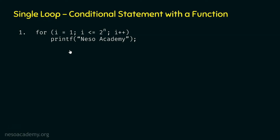In iteration number 1, the value of i is 1. Since 1 is less than 2 power n, the condition is true and the printf function executes. After this, i is incremented by 1, so the new value of i is 2. This is the value of i in the second iteration.